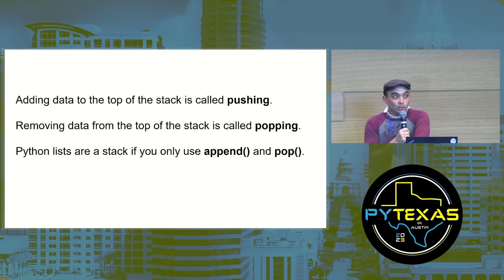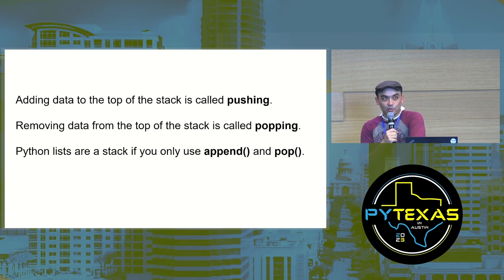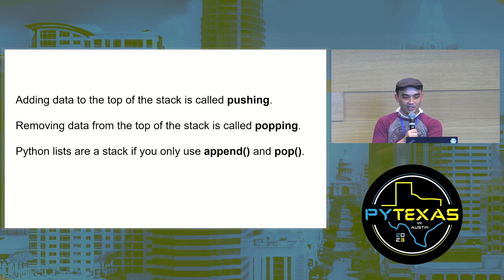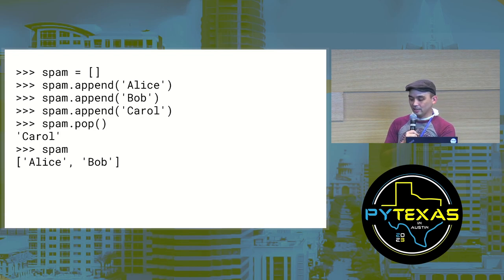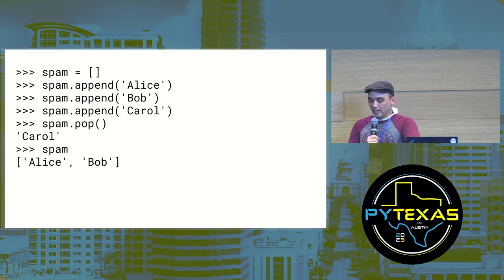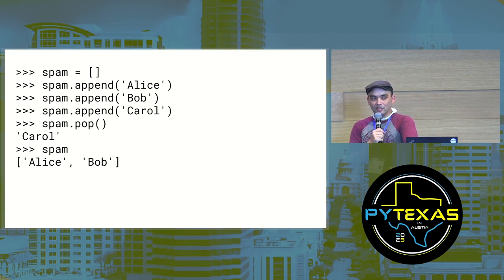Python lists act the same way as stacks as long as you restrict yourself to just append and pop. In this case the last item in the list is the top of the stack. We append 'Alice', then 'Bob', then 'Carol' — then we pop the list, which returns 'Carol'. The list now shows 'Bob' as the top of the stack. That's how stacks work.